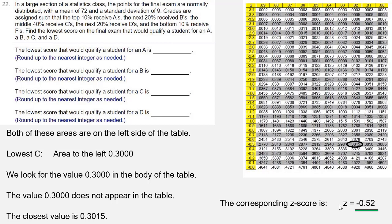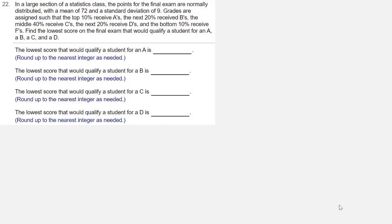So because of symmetry, we'll be able to get the values for the lowest B and the lowest A, and we'll present it in a table format. The lowest D we found had a Z-score of negative 1.28. The lowest C was negative 0.52. Because of symmetry, the lowest B will be positive 0.52, and the lowest A will be positive 1.28.